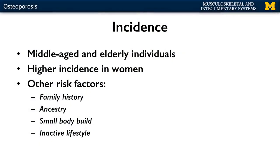Now, who does this occur to? Most individuals, if they live long enough, are going to have some level of osteoporosis. Generally it'll be shown in terms of the vertebrae, though it can occur in other areas of the body as well. This typically happens in elderly and even middle-aged individuals. There is a higher incidence in women — not to say that males don't also have osteoporosis — but it is more likely to show up in women, making women the more frequent patients in osteoporotic clinical practice.